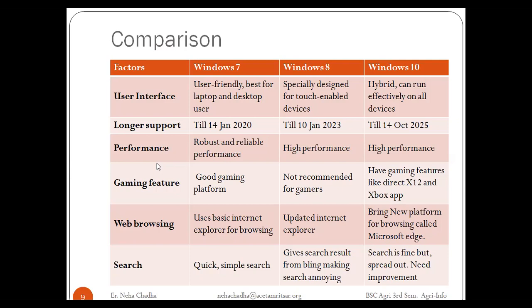Then web browsing: Windows 7 has basic Internet Explorer for browsing. Windows 8 has an updated Internet Explorer. Windows 10 brings a new platform for browsing called Microsoft Edge, a new browsing service added in Windows 10. For search: Windows 7 has quick and simple search. Windows 8 gives search results from Bing, making search annoying — the user doesn't feel comfortable searching on Windows 8, as you have to go back again and again. In Windows 10, search is fine but needs some improvement.